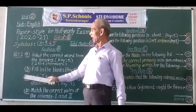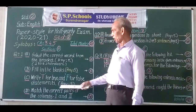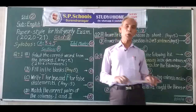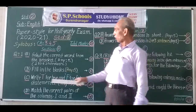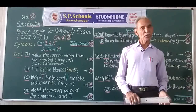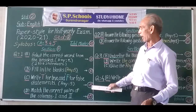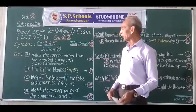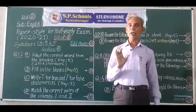Question 1C also has six statements. Some statements may be true and some may be false. You will write T for true statements and F for false statements. You have to answer any five to get marks. This one is very easy — you simply have to identify correct or incorrect statements.